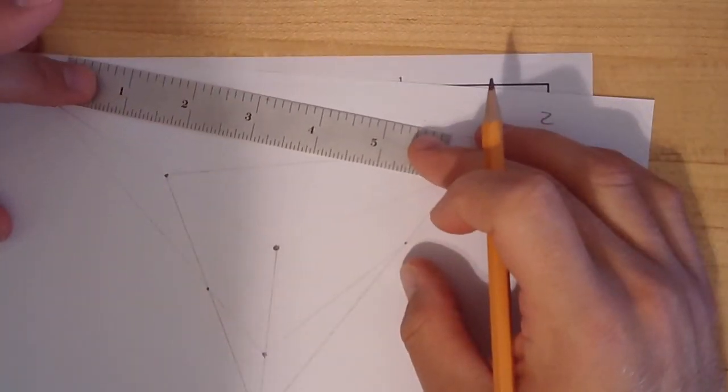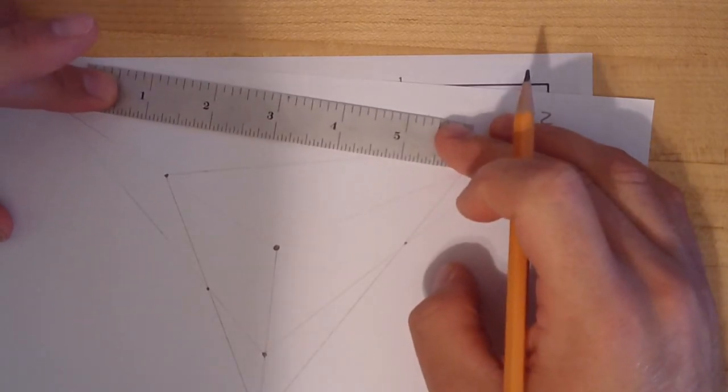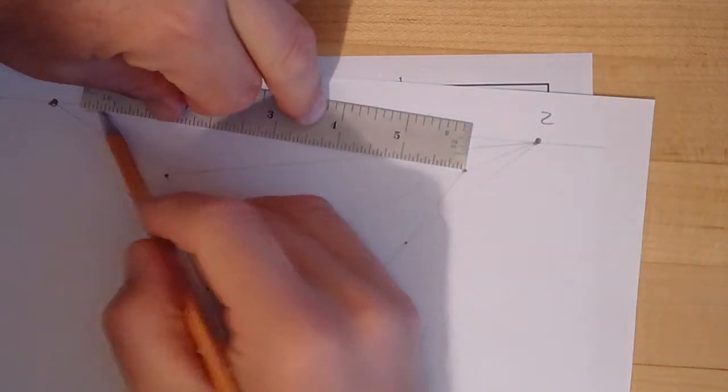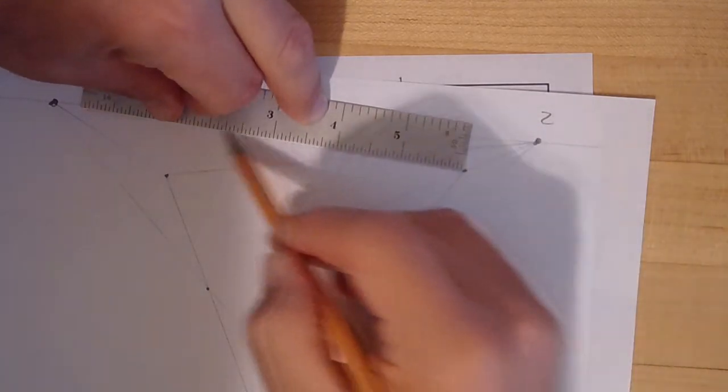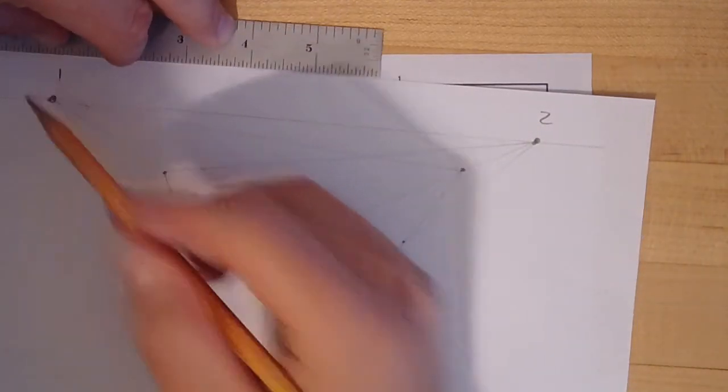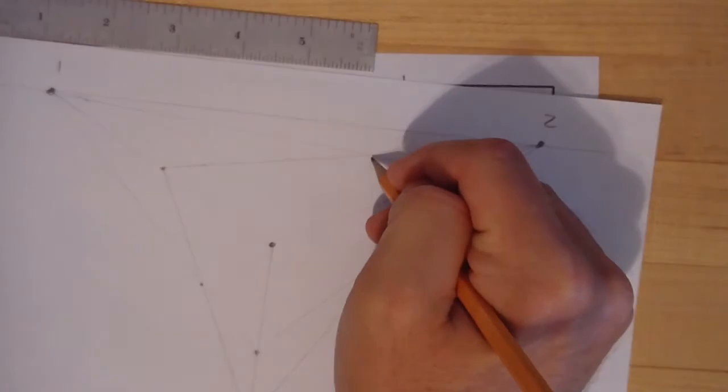I hope that my ruler here is long enough to make it. If not, I'll have to estimate. That looks pretty good. Alright. And I got my last intersection point.